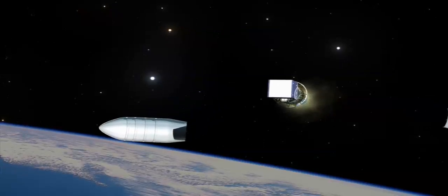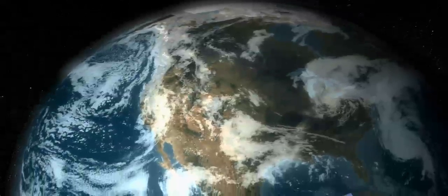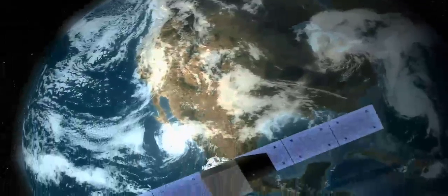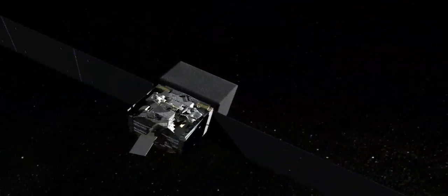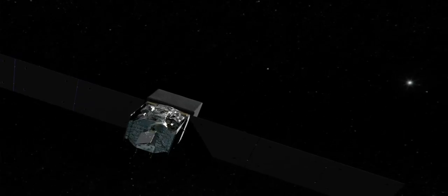For two weeks following launch, controllers carefully checked out the spacecraft's various systems. Could GLAST communicate properly? Did it know where it was pointing? Were the solar panels and batteries providing enough power? Once we knew we had a healthy spacecraft, it was time to turn on the two science instruments.